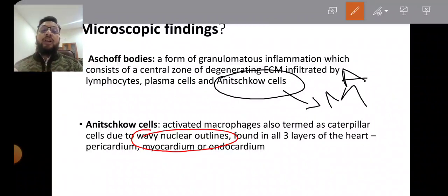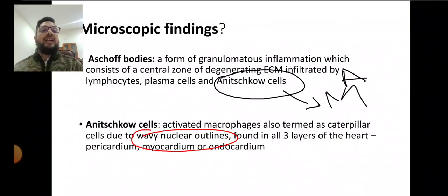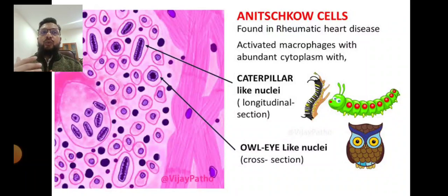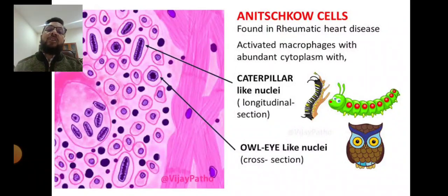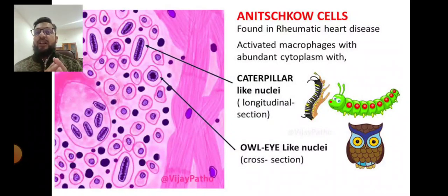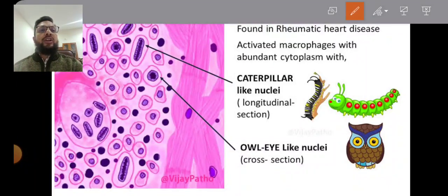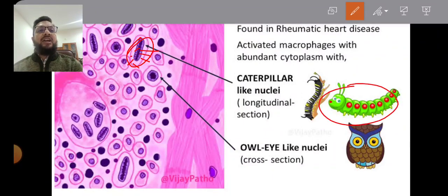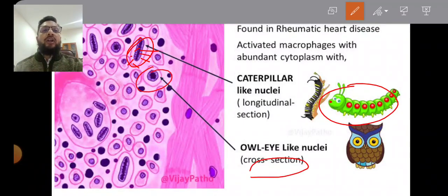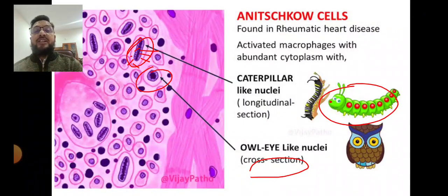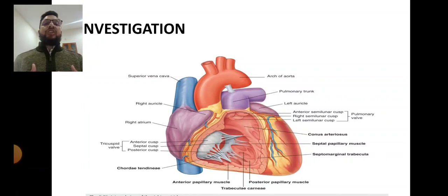Anitschkow cells are activated macrophages found in all three layers of the heart in rheumatic heart disease. They have a caterpillar-like nucleus with a wavy pattern. In cross-section their nucleus looks oval. These are the distinctive microscopic features of rheumatic heart disease.